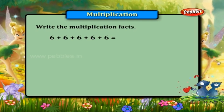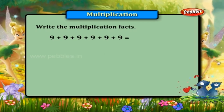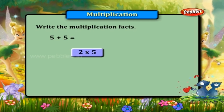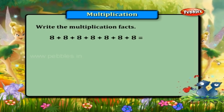Six plus six plus six plus six plus six plus six is equal to six into six. Nine plus nine plus nine plus nine plus nine plus nine is equal to six into nine. Five plus five is equal to two into five. Seven plus seven plus seven plus seven is equal to four into seven. Eight plus eight plus eight plus eight plus eight plus eight plus eight is equal to seven into eight.